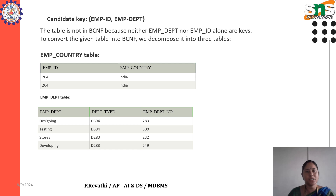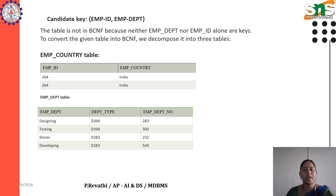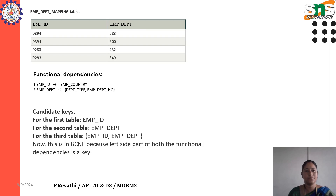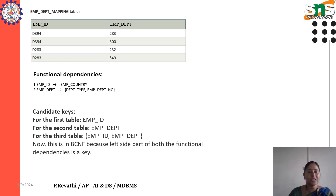The first is the employee country table, which contains employee ID and employee country. The next is the employee department table, which contains employee department, employee department type, and employee department number. The third is the employee department mapping table, containing employee ID and employee department. The functional dependencies are: employee ID determines employee country, and employee department determines department type and employee department number.